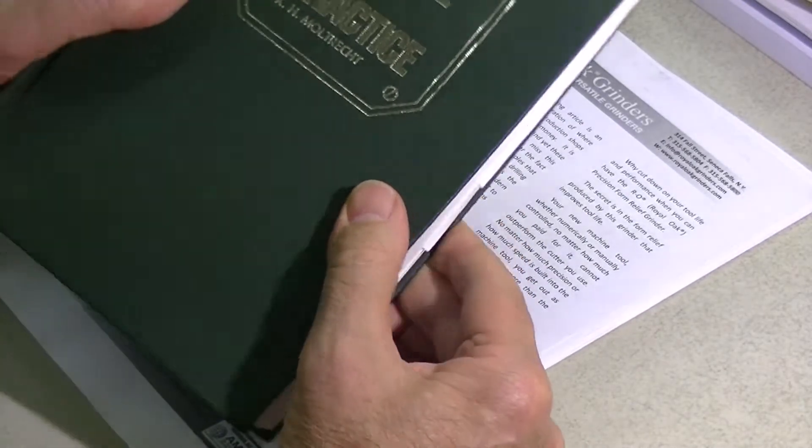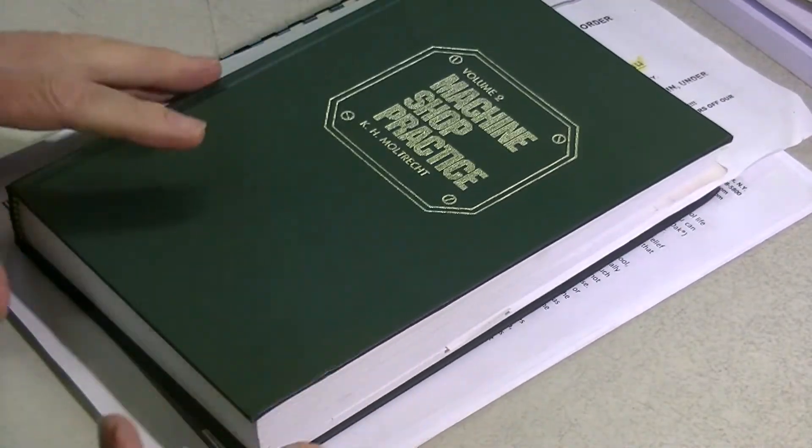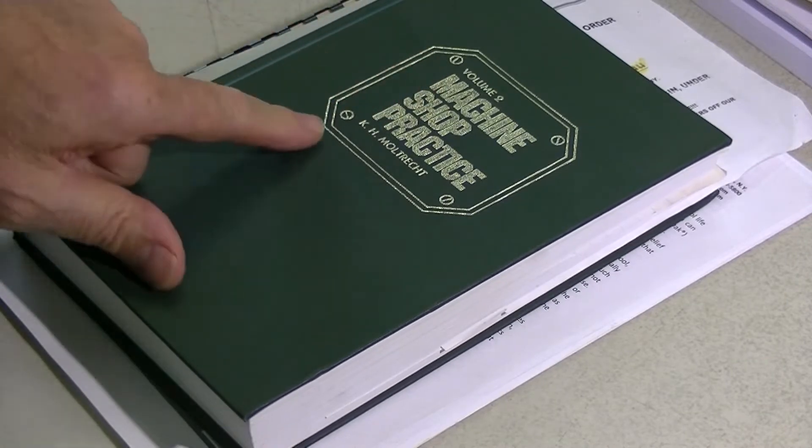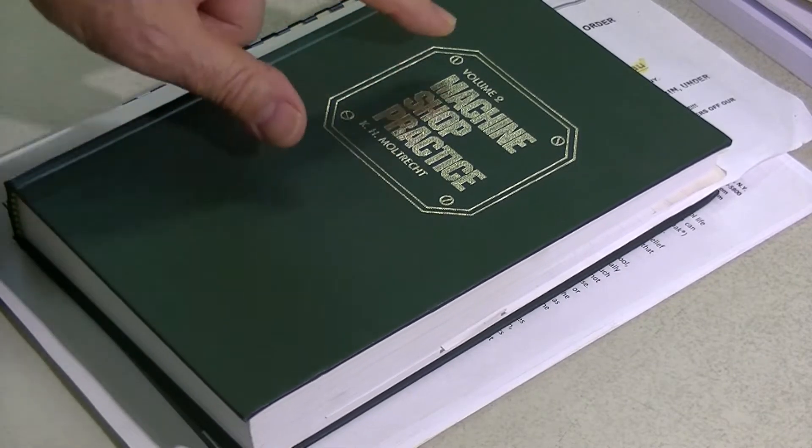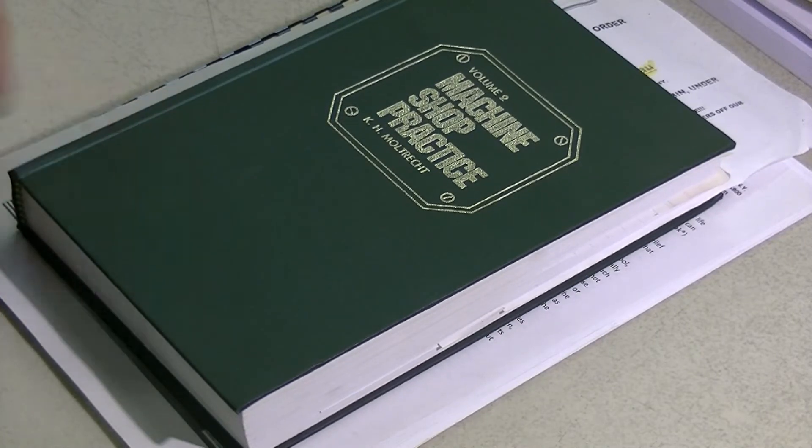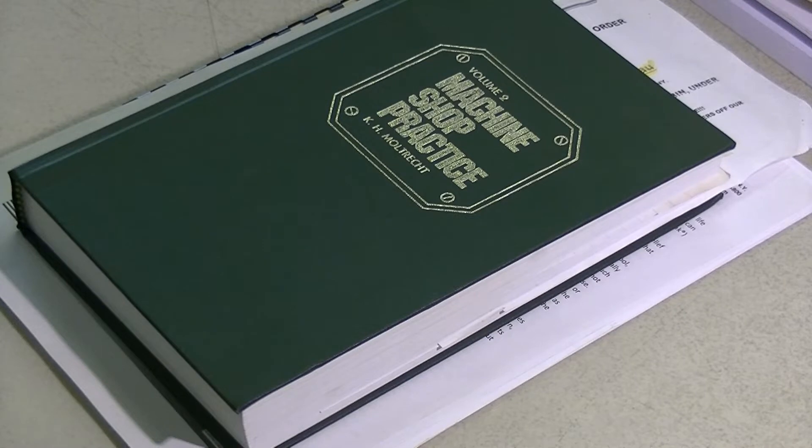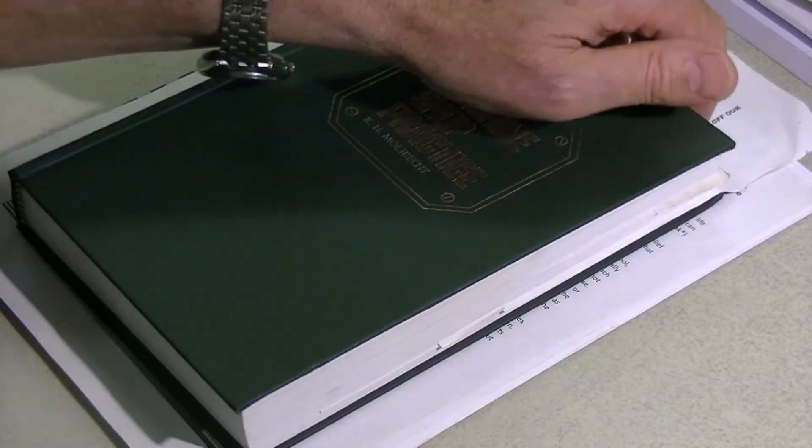There's been a lot of really good textbooks written over the years. I don't know how well that's coming up - it's Machine Shop Practice by K.H. Moltrecht, volume 2. I haven't been able to get hold of volume 1. This one has the tool and cutter grinding information in the back of it, really good drawings and photos, good explanation. This fellow is an absolute genius.